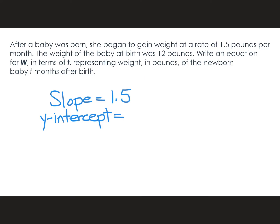What was the initial amount, the starting amount? Well, the baby was born at 12 pounds. One thing to watch out for is that usually we're used to writing y equals our slope times x and then our y-intercept. In this case, they're not using y and x — they're using w and t. So we just need to use what they asked for. So: w equals 1.5t plus 12.